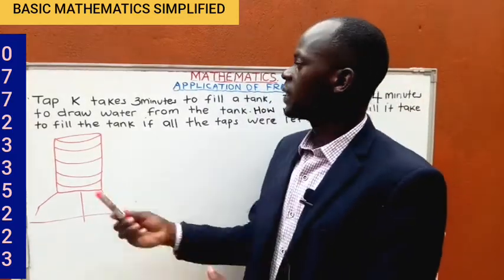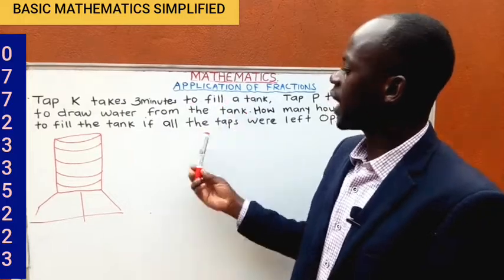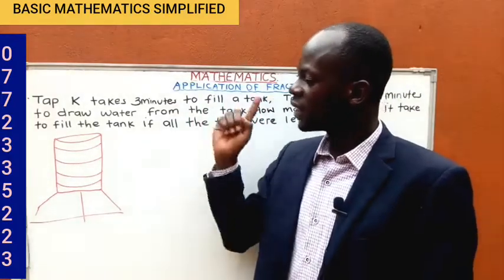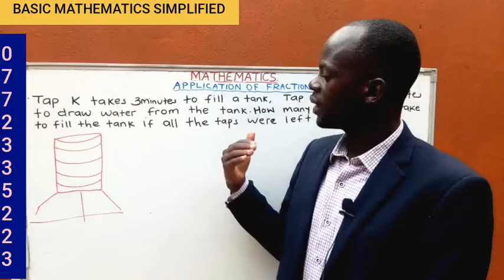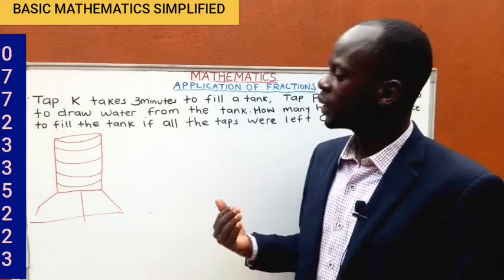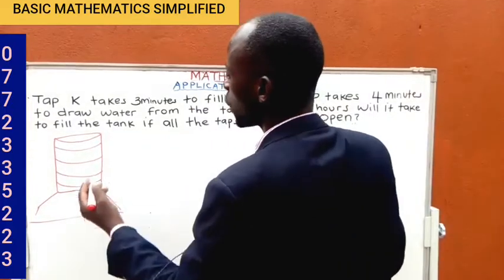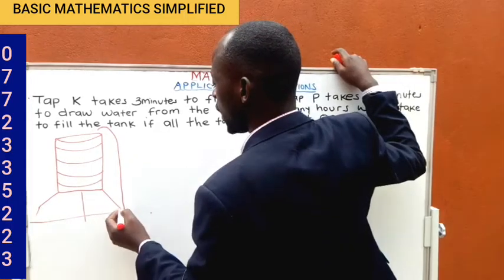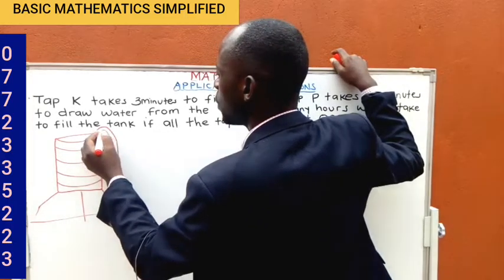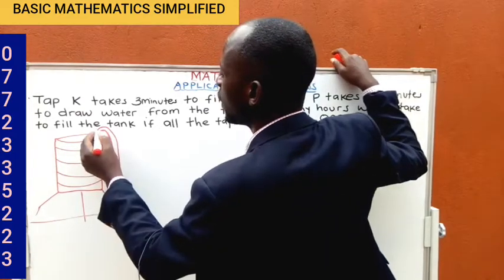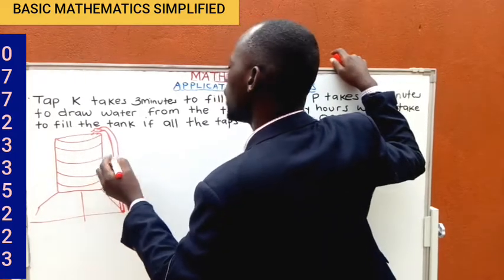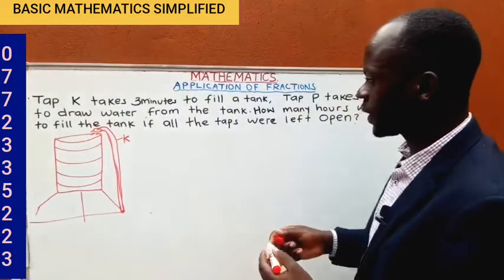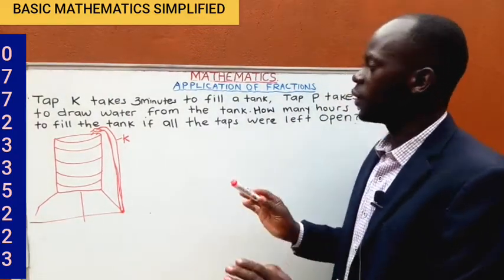The statement says that Tap K takes three minutes to fill a tank. Assuming this is the tank, Tap K takes only three minutes to make this tank filled. The tank is connected from the ground up like that, so water is fed in from below and spread up to fill it. Tap K takes three minutes to fill that tank when it is just allowed to work.